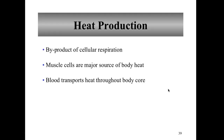Heat production: almost half of the energy released during muscle contraction is lost to heat, which helps maintain our body temperature at 37 degrees Celsius. Excessive heat is lost through negative feedback mechanisms discussed in chapter one, including sweating, dilation of superficial blood vessels, increased breathing rate, and increased heart rate. Blood is the transport system for many things in the body, including heat.